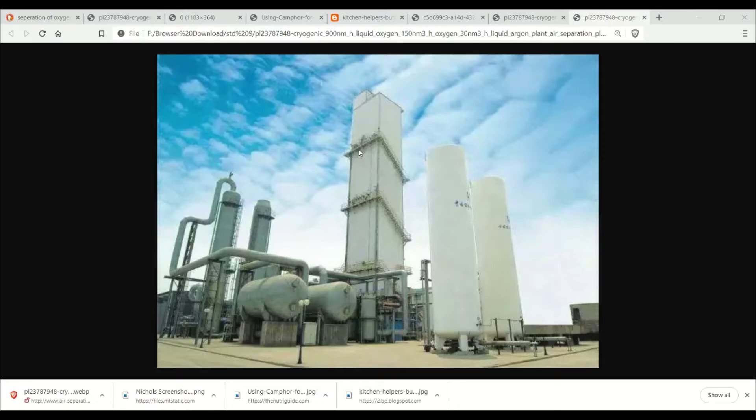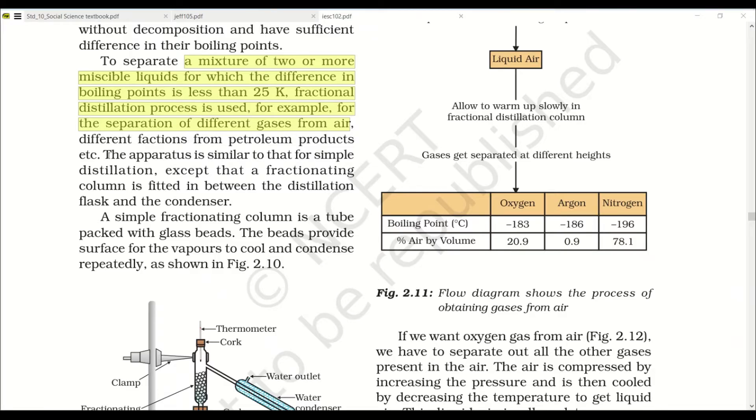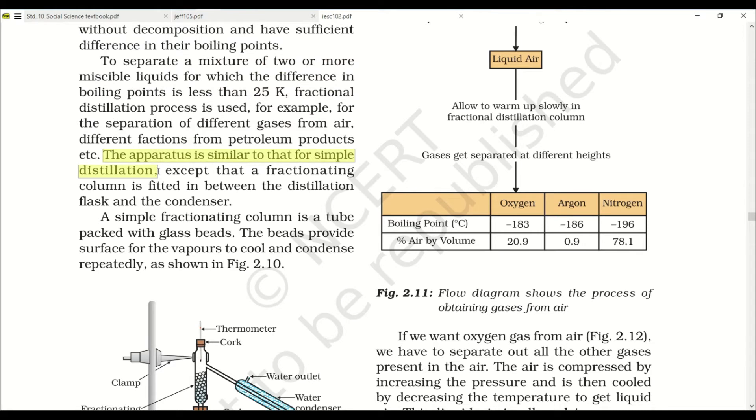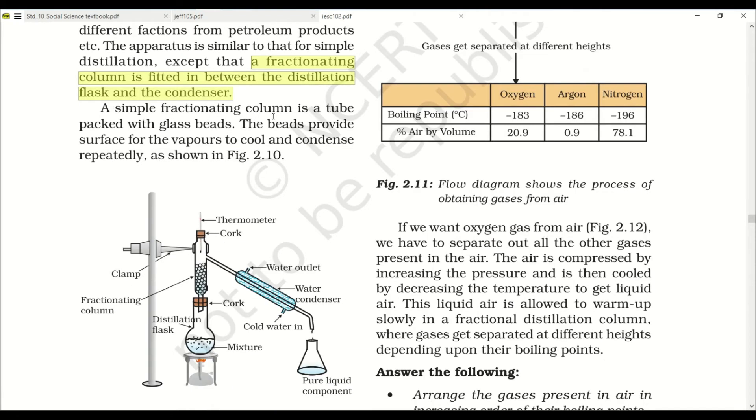To separate a mixture of two or more miscible liquids for which the difference in boiling point is less than 25 degrees, fractional distillation process is used. For example, separation of different gases from air, different fractions from petroleum products, etc. The apparatus is similar to that for simple distillation except that a fractionating column is fitted between the distillation flask and the condenser. A simple fractionating column is a tube packed with glass beads. The beads provide surface for the vapor to cool and condense repeatedly as shown in figure 2.10.